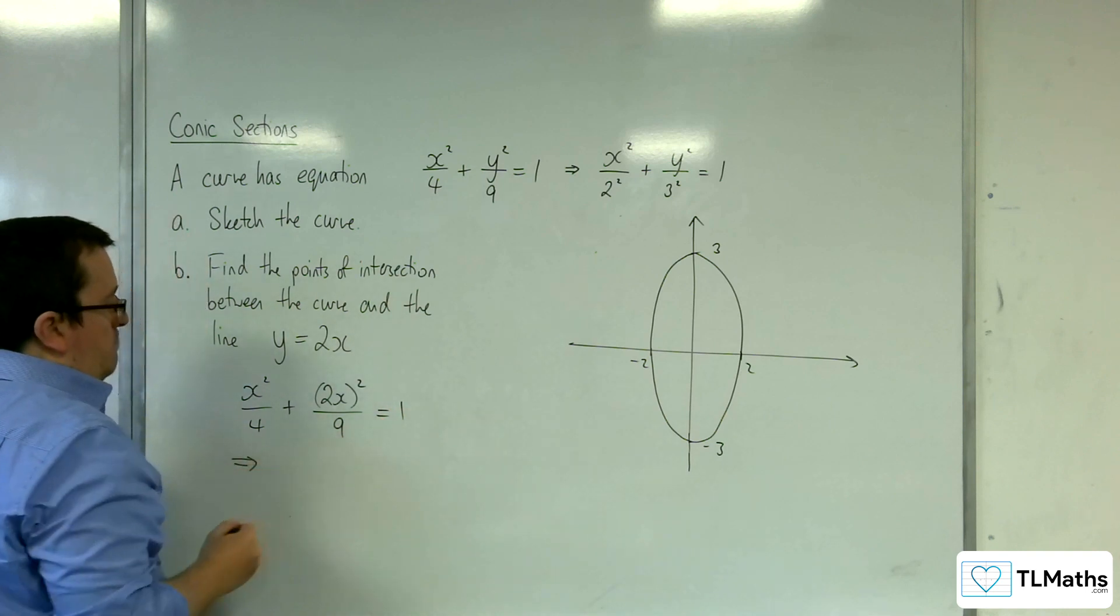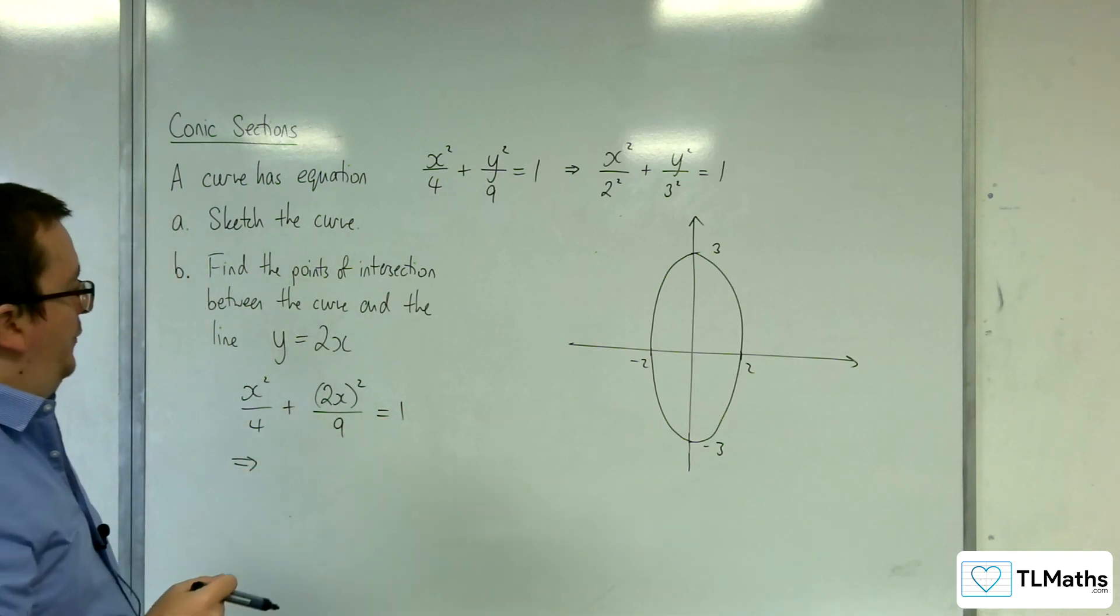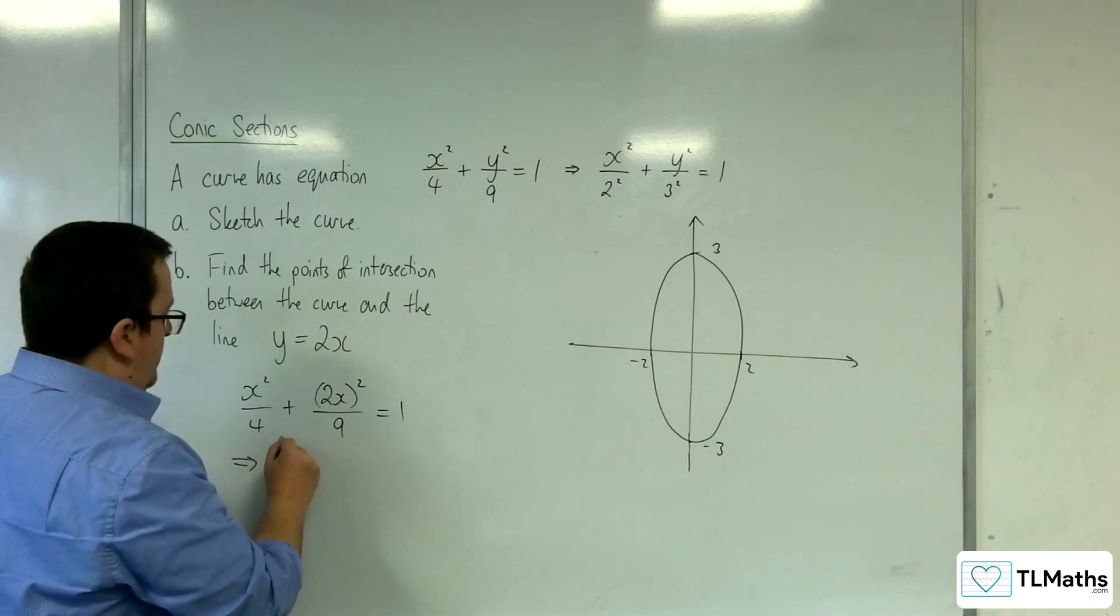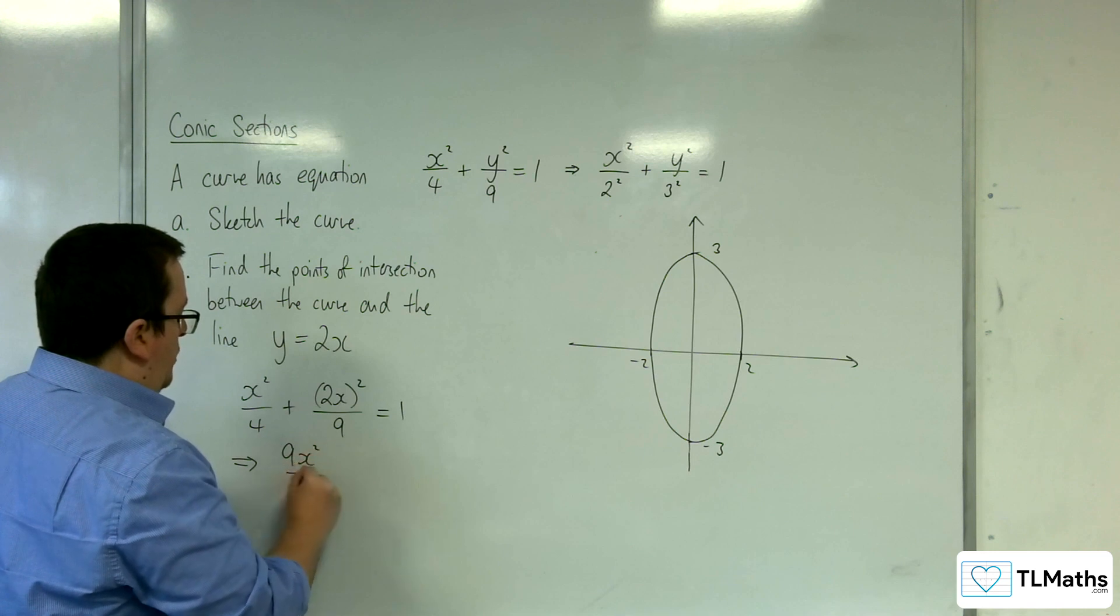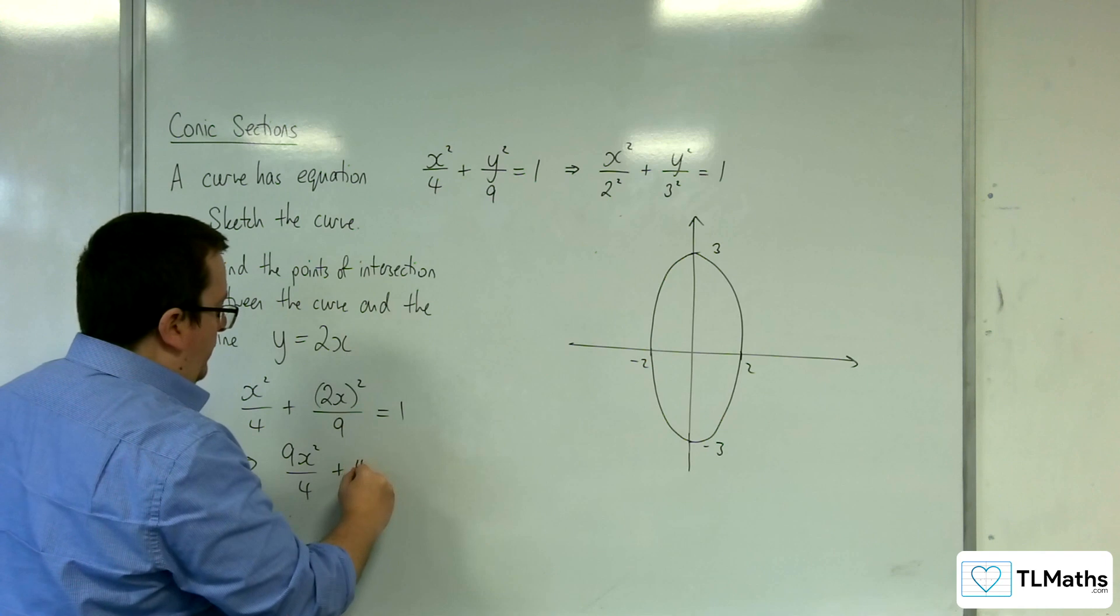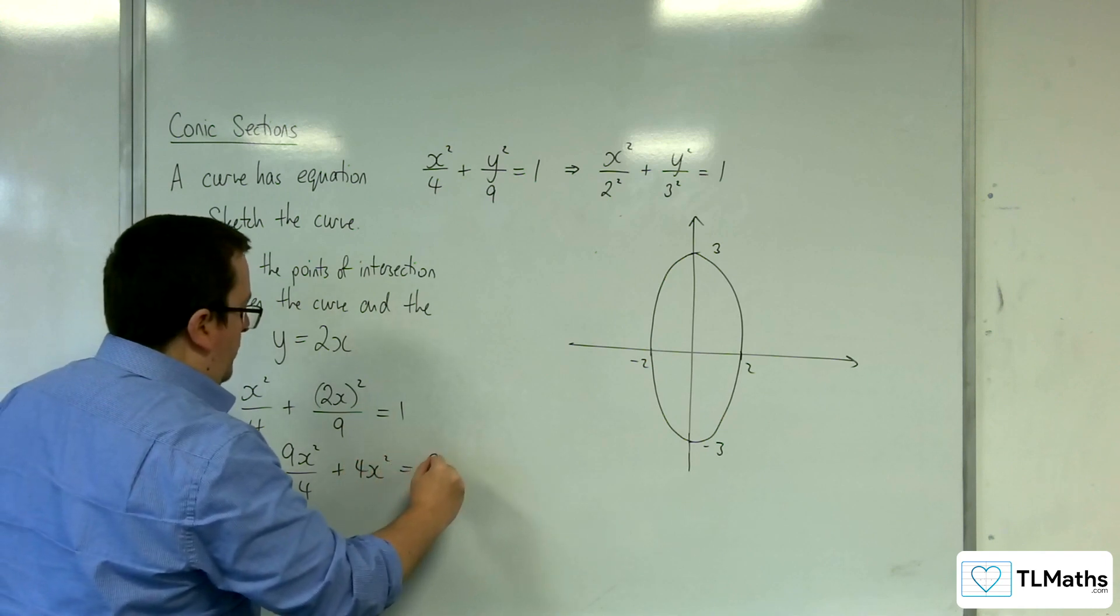So what I'm going to do is multiply both sides by the 9 first. So multiply everything through by 9. So I'm going to get 9x squared over 4 from there. And then here I've got the 2x all squared, which is 4x squared, is equal to 9.